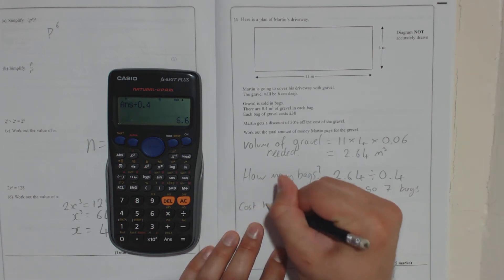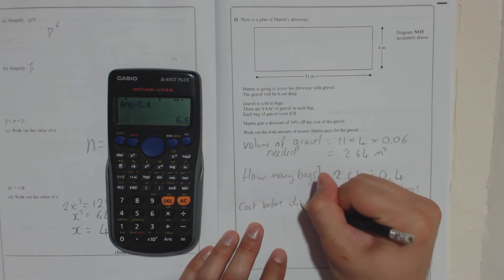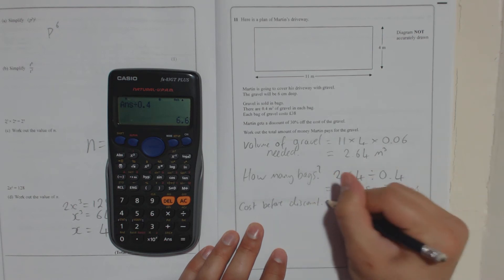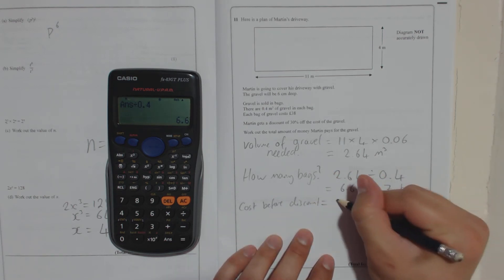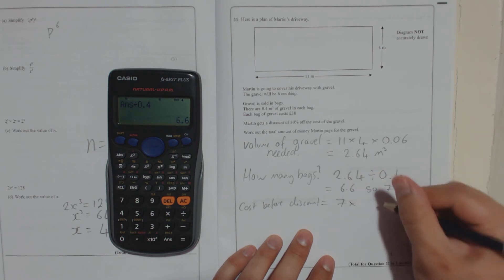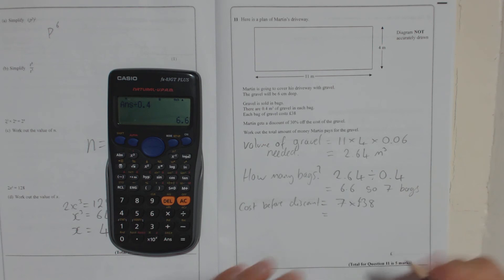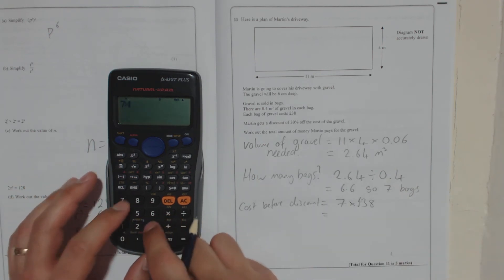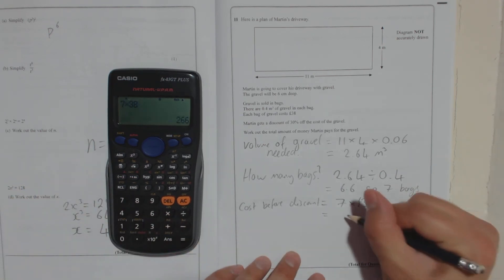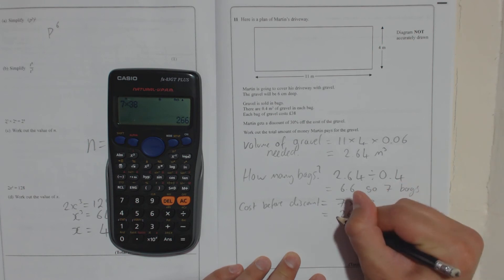Cost before discount then is equal to 7 bags times by, each bag costs 38 pounds, £38. Which is 7 times 38, £266.